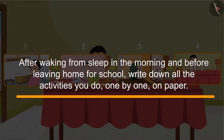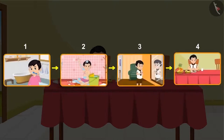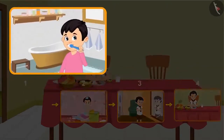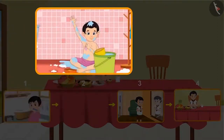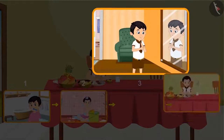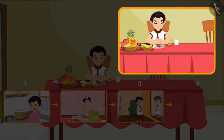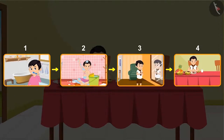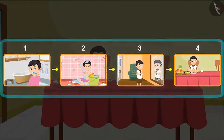So come on children, now take a paper and one by one write down all the activities you do after waking up in the morning and before leaving home for school. Write the first activity you do after waking up, then write down the next activity and so on. Write all the activities you do at home before leaving for school. This is the order of your activities.